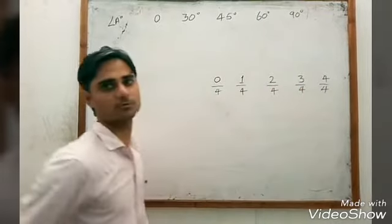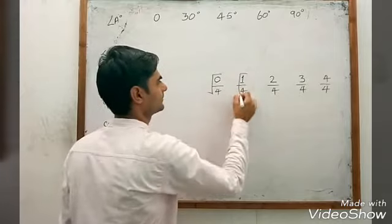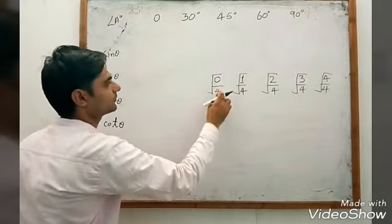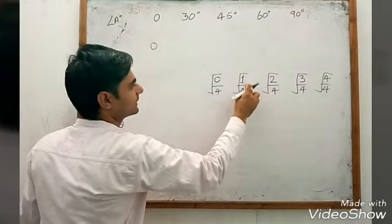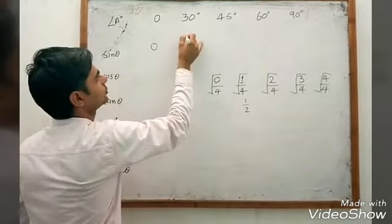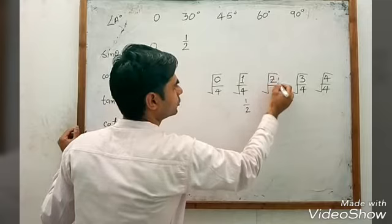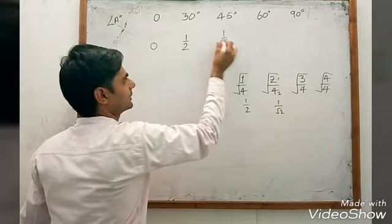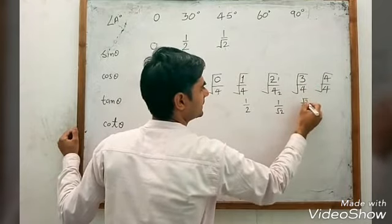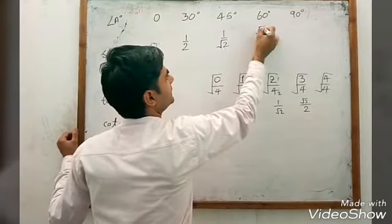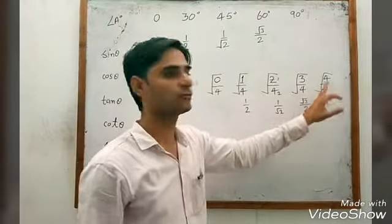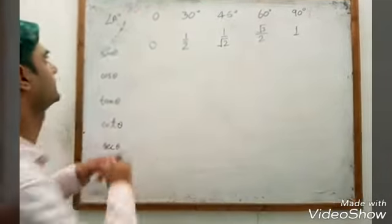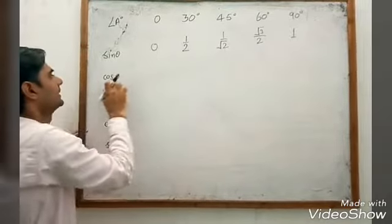Divide each by 4, then take the square root of each one. So: √(0/4) = 0; √(1/4) = 1/2; √(2/4) = 1/√2; √(3/4) = √3/2; √(4/4) = 1. These are the values of sin θ at 0°, 30°, 45°, 60°, and 90°.